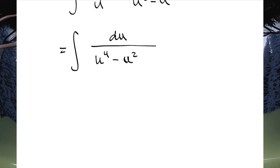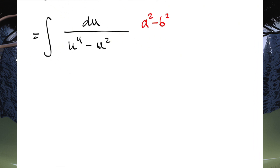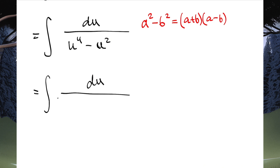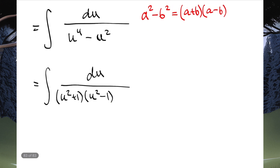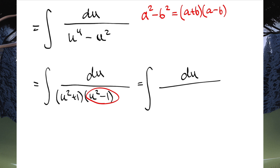Now, how do we deal with this integral? We've got to sort out the denominator. We can notice this is the difference of two squares. Recall: a squared minus b squared equals (a+b)(a-b). So we can change this to the integral of du over (u²+1)(u²-1). But then we've got a difference of two squares again in u²-1, so applying it again, this equals the integral of du over (u²+1)(u+1)(u-1).